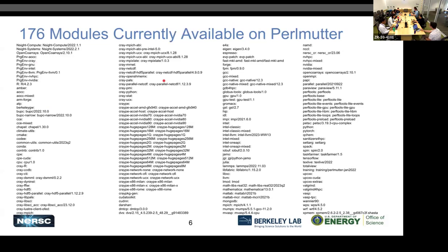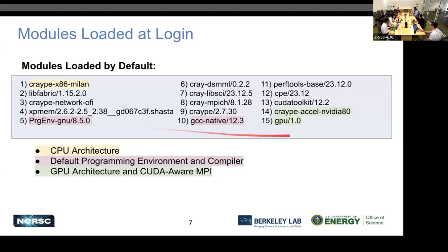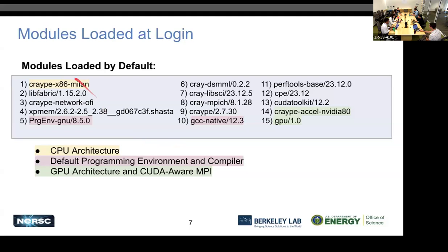There are a lot of modules available. The first and easiest way to get the software you want is to find out if there's a module for it and load it. When you log into Perlmutter, several modules are loaded by default. I'm pointing out that CratePE-x86-Milan specifies the CPU architecture — when you use compiler wrappers, they look at that module and do optimizations specifically for that processor.